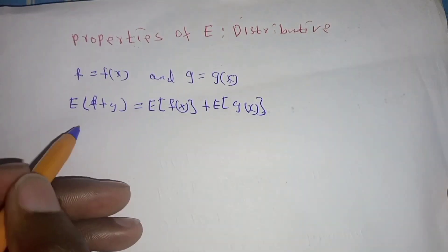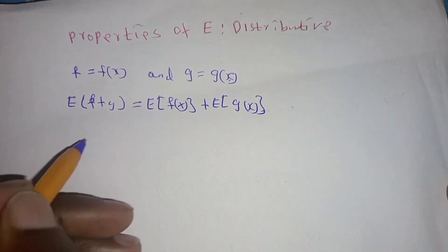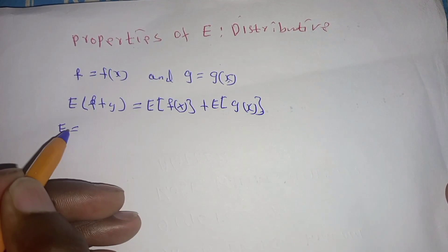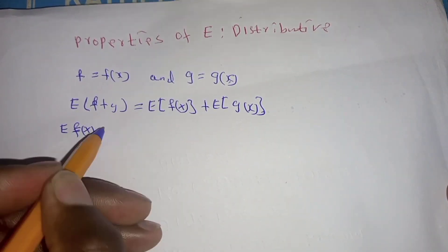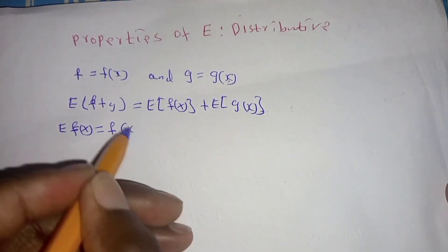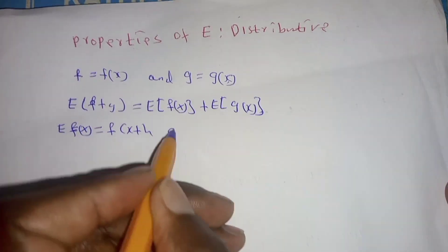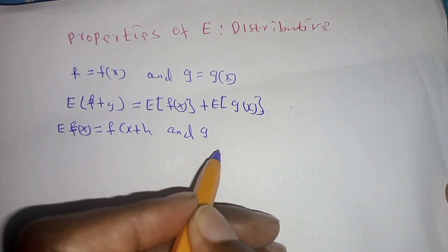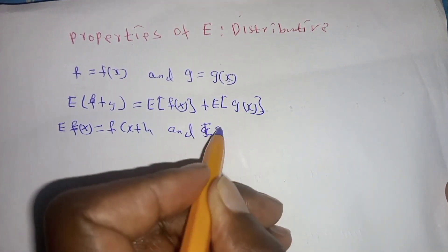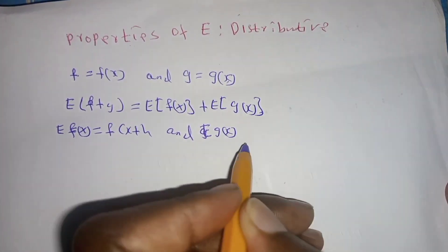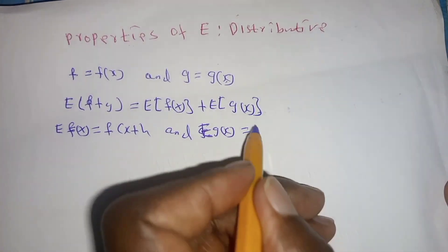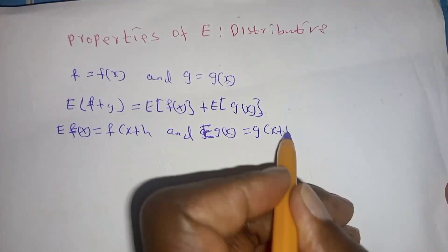Then from the definition of the shift operator which is defined as E of f of x is equal to f of x plus h, and E of g of x is equal to g of x plus h.